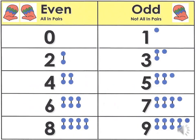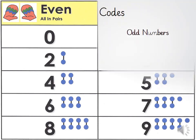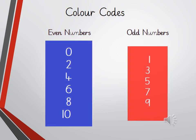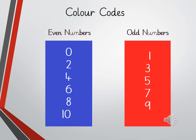Here you can see that all the even numbers have pairs — there is no extra number left alone. However, in odd numbers, there is one which is left alone. So odd numbers are one, three, five, seven, nine; and even numbers are zero, two, four, six, eight. The color code for even numbers is blue, and the color code for odd numbers is red. Always remember that even numbers can be highlighted with blue color and odd numbers with red color.